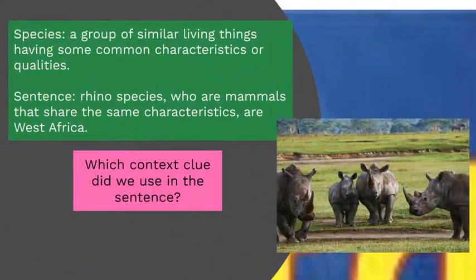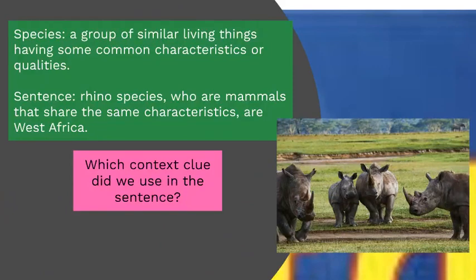Moving on to the word species. Species is a group of similar living things having some common characteristics or qualities. Here's a sentence: 'Rhino species, who are mammals that share the same characteristics, are West African.' Which context clue did we use? The definition is right next to the word species — 'who are mammals that share the same characteristics.' Well done to the students who said definition. That is the clue that helped us understand what the word species means.